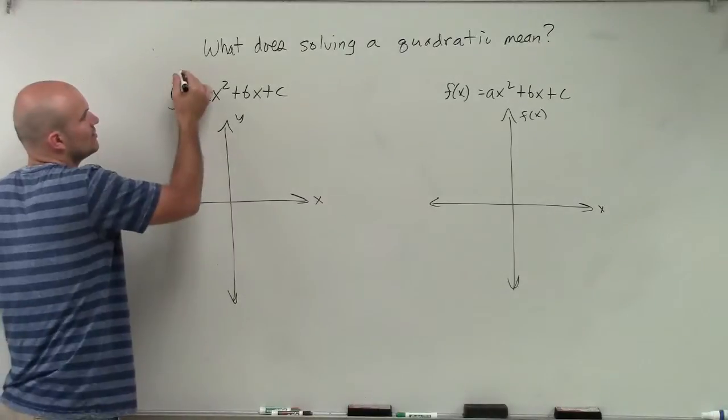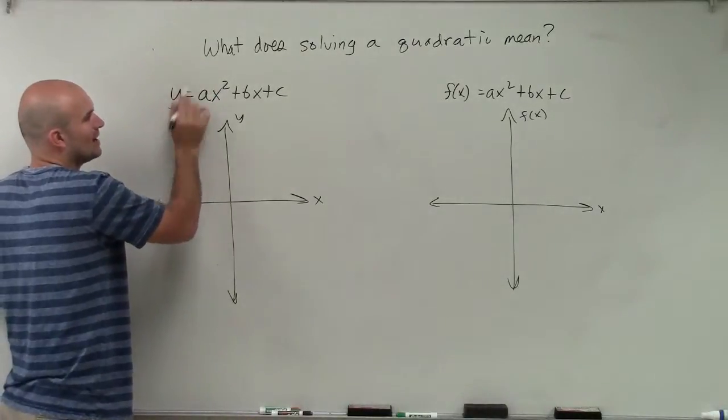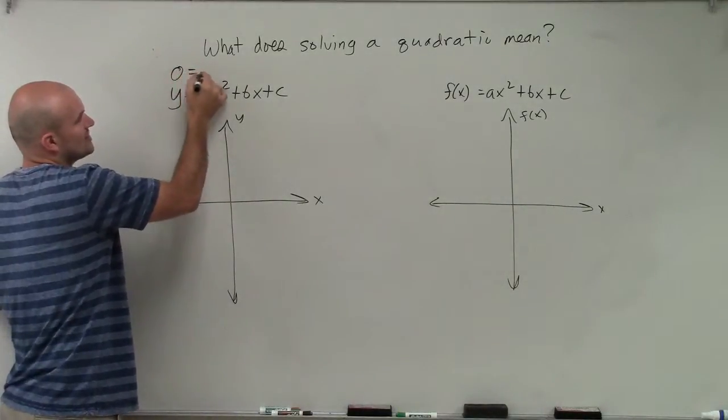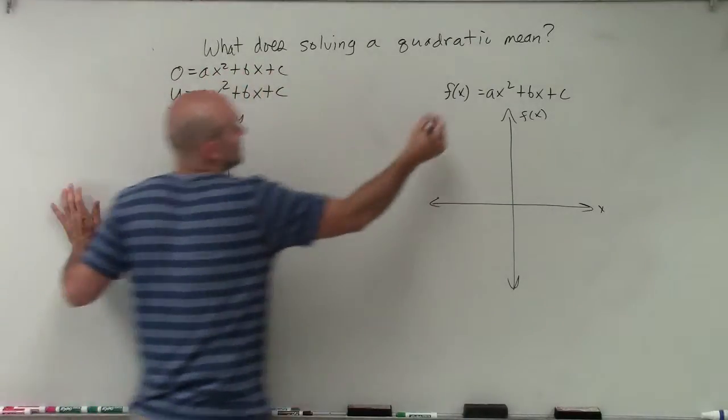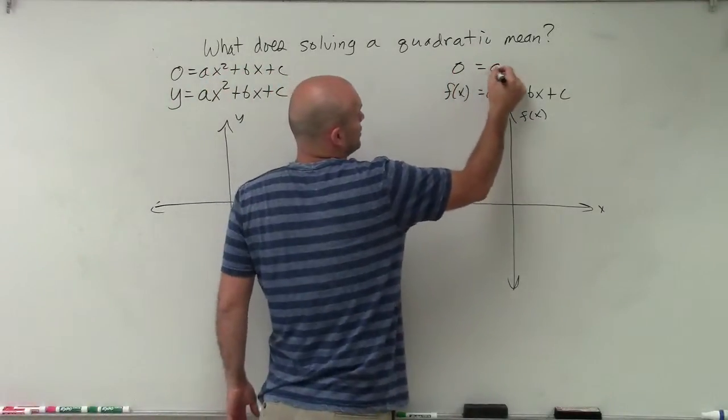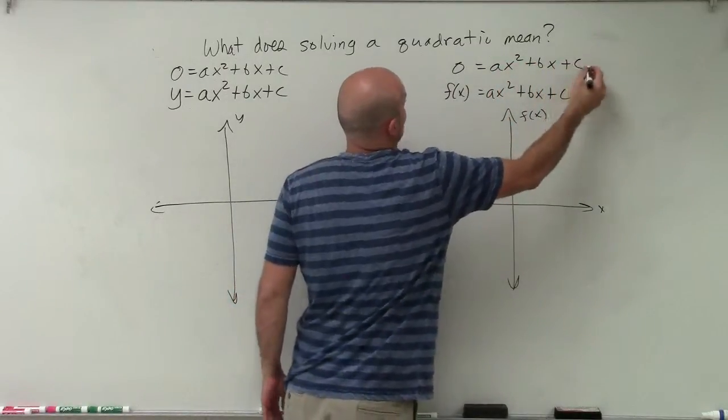So that's what we do. What we do is we set these equal, our y-coordinate equal to 0. So say 0 equals ax squared plus bx plus c. Or we say f of x is now going to equal 0 ax squared plus bx plus c.